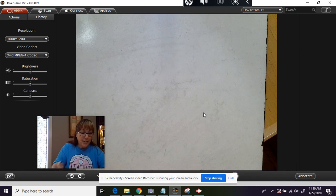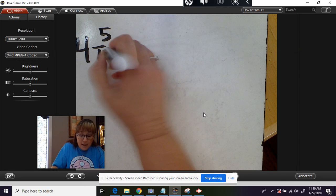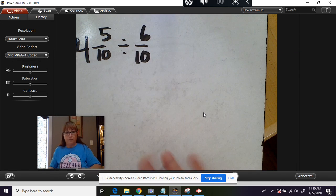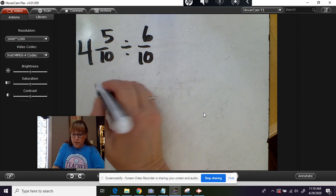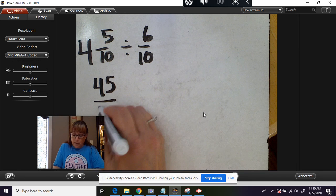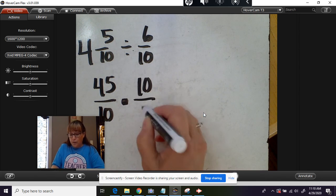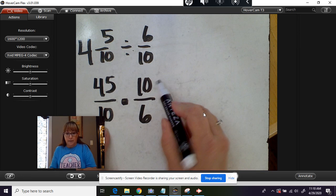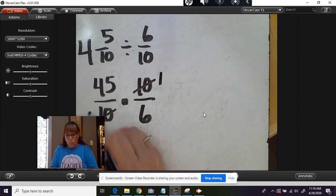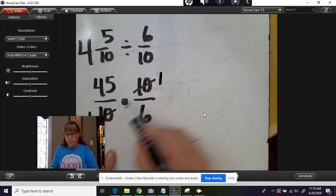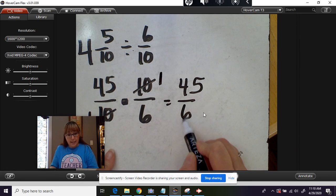Okay, last one. Four and five tenths divided by six tenths. 10 times four is 40. Plus five is 45 over 10. Times, flip this, 10 over 6. Okay, looky here. I can divide by 10. 10 divided by 10 is one. 10 divided by 10 is one. 45 times one is 45. One times six is six.